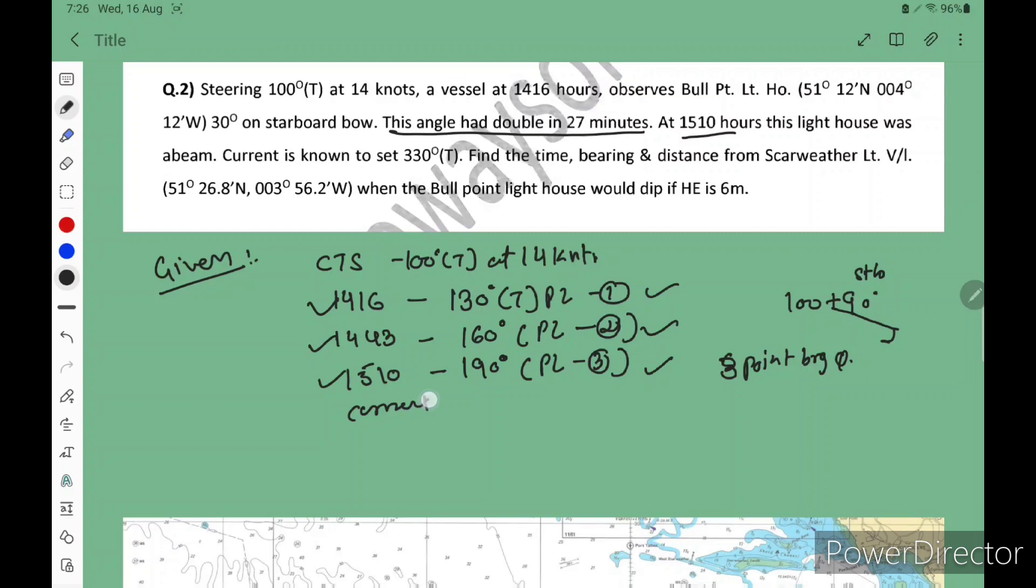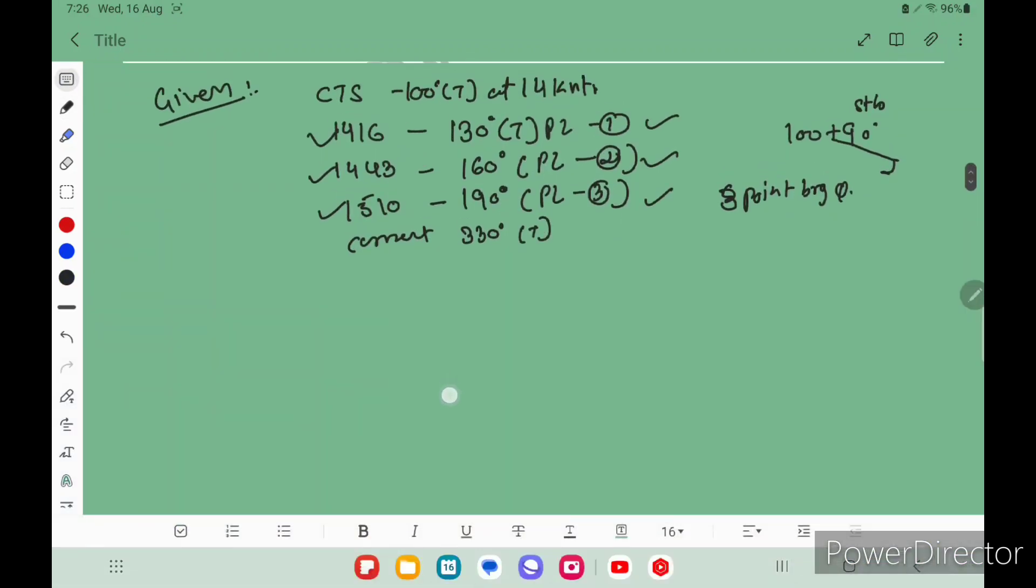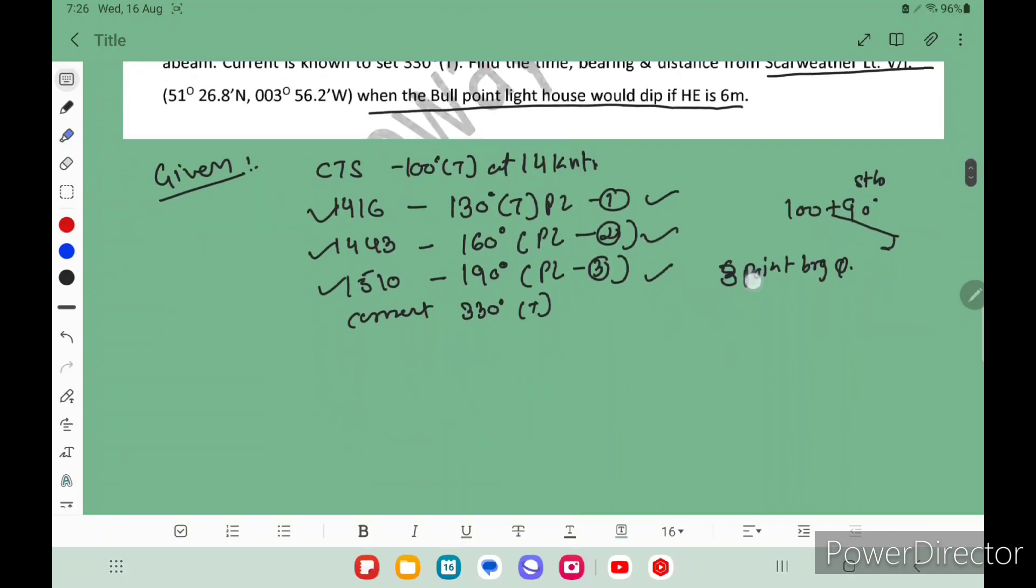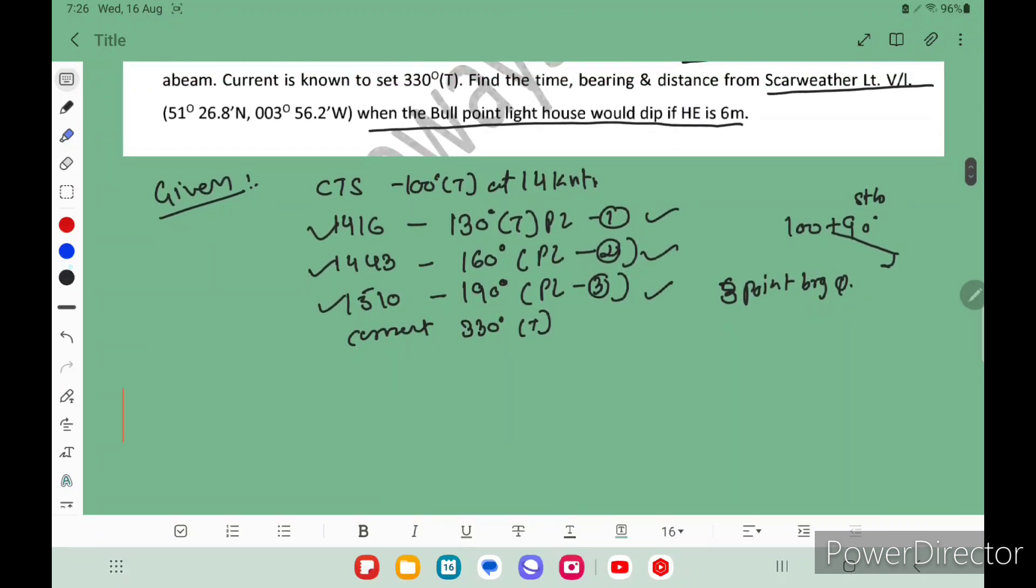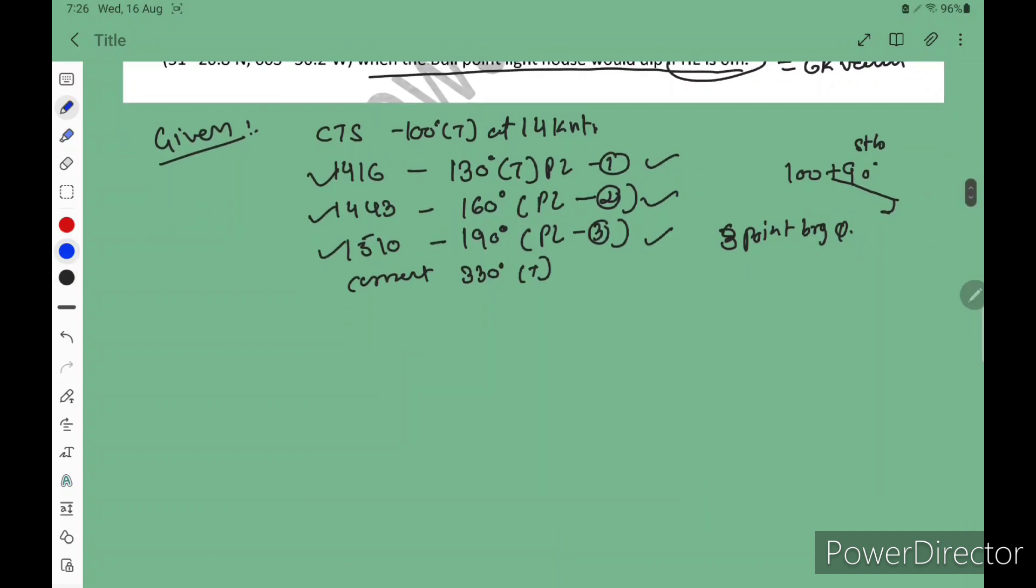Then you have current also. Find the time, bearing and distance from Squareweather Lighthouse when the Bull Point Light dipped. So you have to make the rough plot also. Here height of eye is also given, so that means we have to calculate GR value also, not LR value, because meteorological visibility is not given in the question.